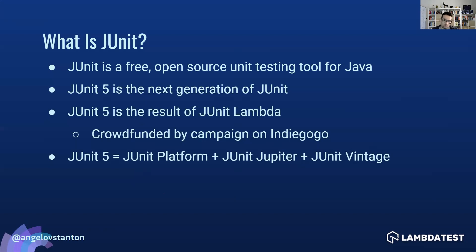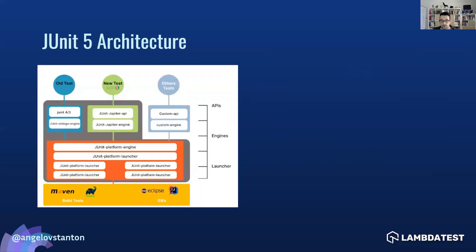Testing with JUnit and Selenium combined helps to write test cases in a more structured way. The annotations we are going to learn during the course are used for identifying test methods, a variety of assertions, grouping tests into test suites, and maintaining tests — which are major reasons for JUnit's popularity for cross-browser testing. JUnit is free and open source, and JUnit 5 is the next generation. Fun fact: JUnit 5 was the result of a project called JUnit Lambda that was actually crowdfunded by a campaign.